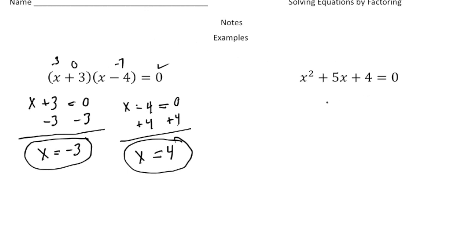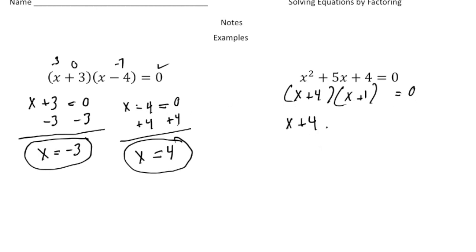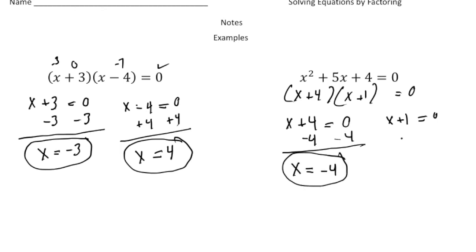So here we have x squared plus 5x plus 4 equals 0. Notice this one is not factored yet, so I'm going to factor this out. That's going to give us an x and an x, and it looks like a plus 4 and a plus 1. Then just like before, we're going to have each factor equal 0: x plus 4 equals 0, and x plus 1 equals 0. We just solve for x — taking away 4 gives us x equals negative 4, and taking away 1 gives us x equals negative 1.